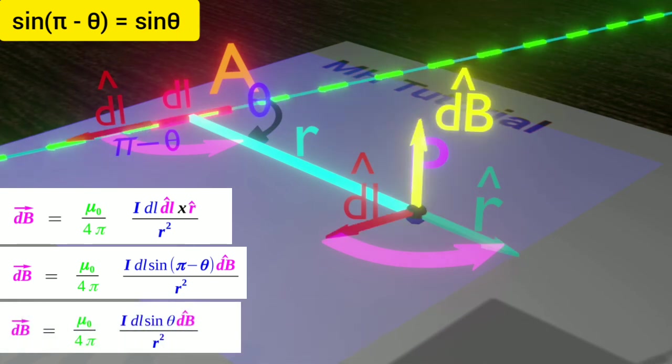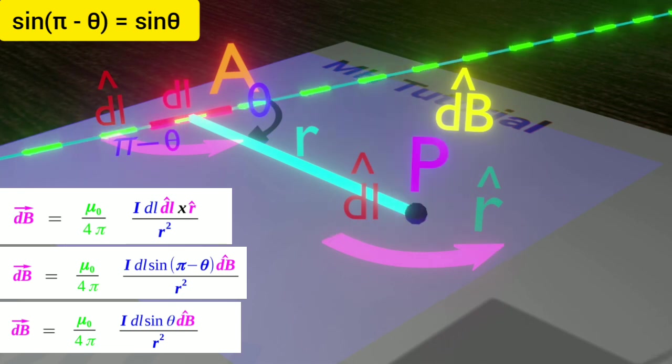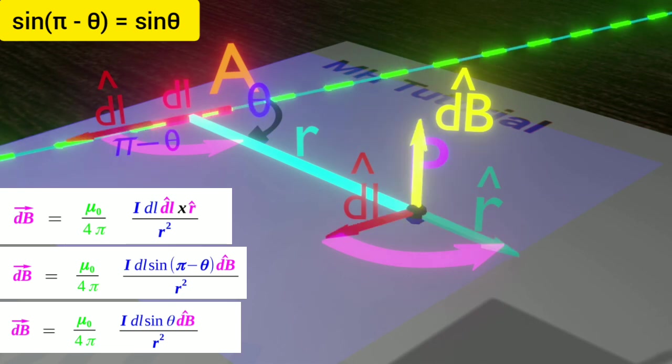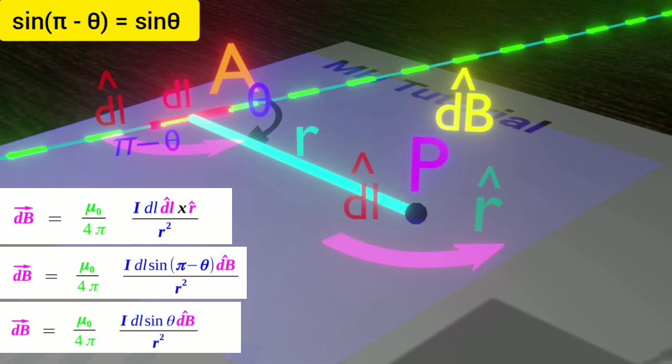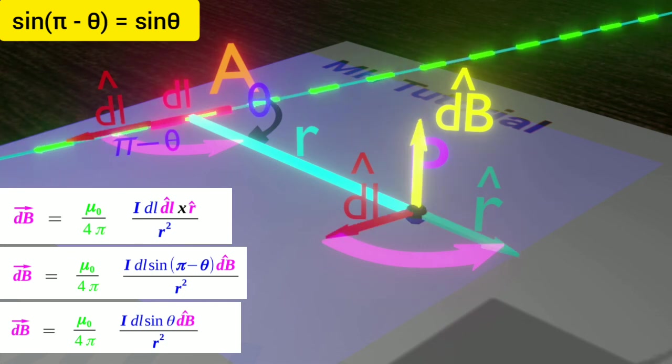And the direction of the dB is now upwards. Thus, if we switch direction of the current, the direction of dB also changes. This time it should be completely opposite to a previous direction.